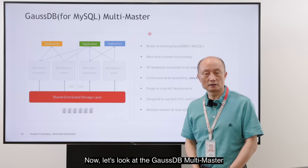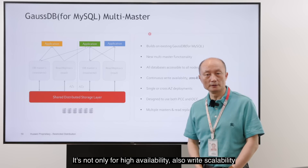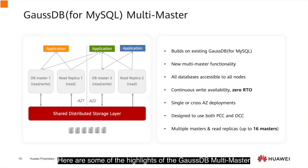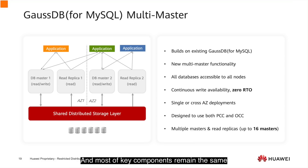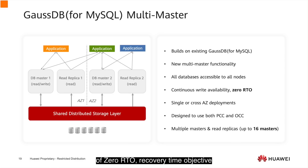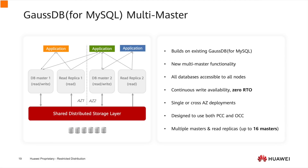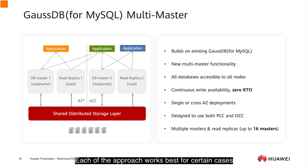GaussDB Multimaster not only offers high availability but also write scalability, extended from one writer to multiple writers. Some highlights of GaussDB Multimaster: it builds on the existing GaussDB designed for the cloud, and most key components remain the same but adds the new multimaster functionality. It provides continuous read and write availability with zero RTO recovery time objective. It combines the best of log-based pessimistic concurrency control and optimistic-based design, with each approach working best for certain cases, and GaussDB makes smart decisions on which approach to use.